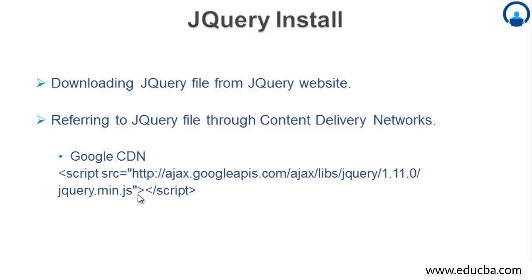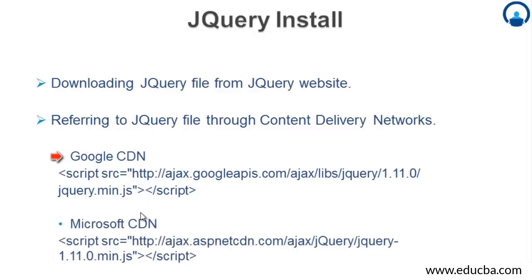Microsoft also provides a CDN. Similar to Google, place the script tag in the head section of your HTML document. The path for the Microsoft CDN is: http://ajax.aspnetcdn.com/ajax/jQuery/[version]/jquery.min.js — this also refers to the minified production version. In this way, even without downloading and hosting the jQuery.js file locally, you can still access all the functionalities of jQuery.